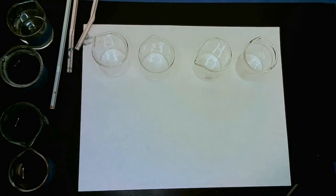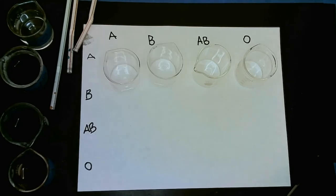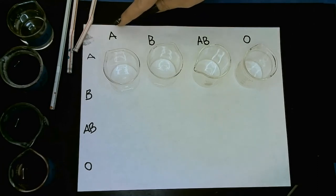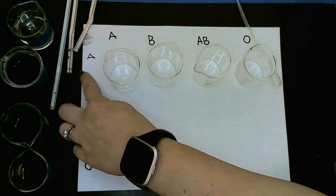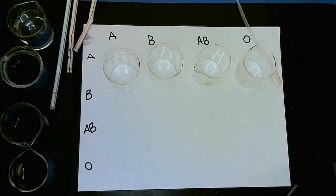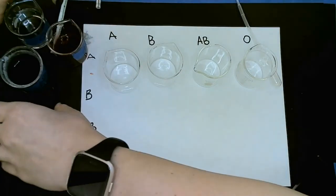I'm going to write down on each of these and label on the paper. Okay, so I've just written down on here A, B, AB, and O. And then down along the side I wrote the same thing. And in fact, I'm going to organize these so that they are lined up with their appropriate rows here.